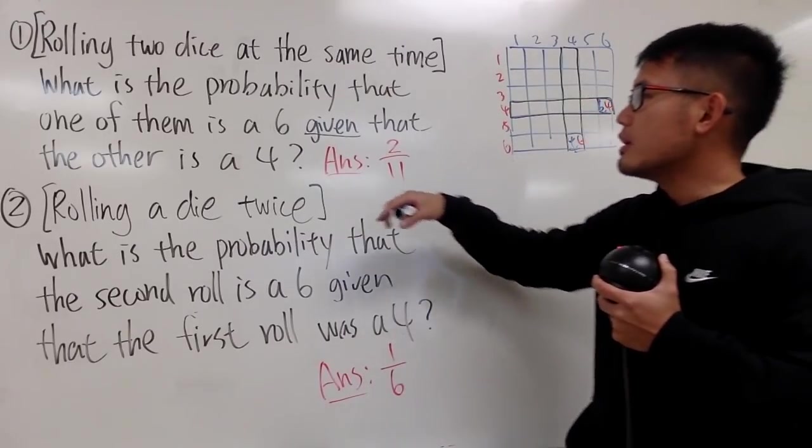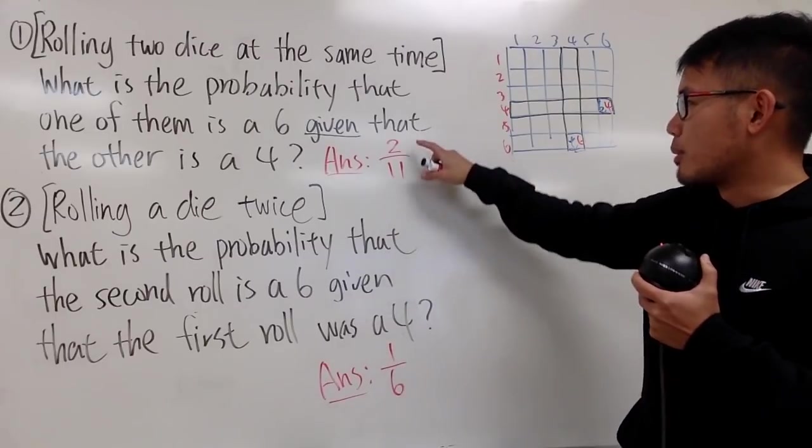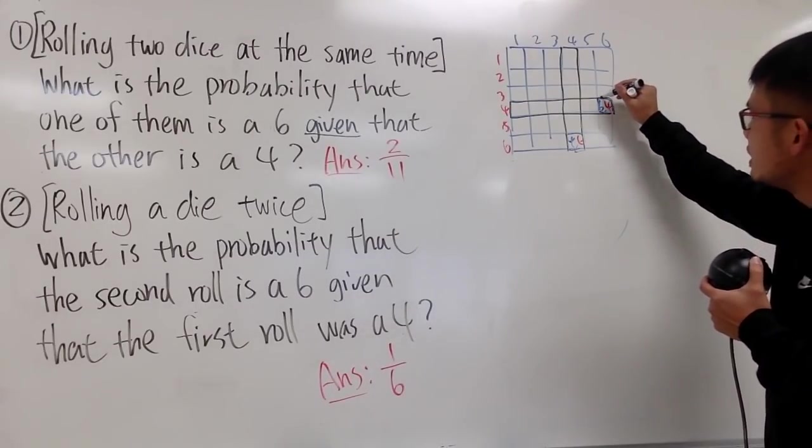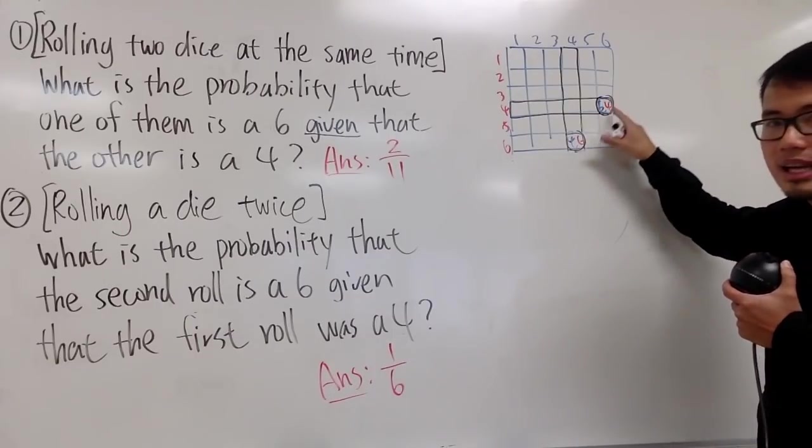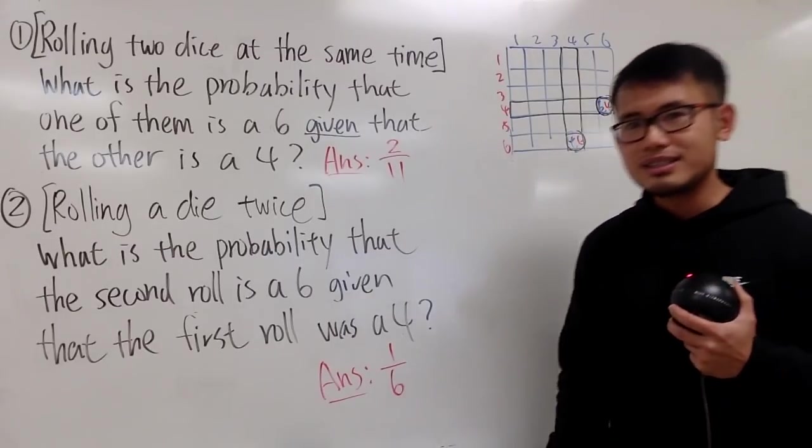Now, I will guess the other one is a 6. I will be successful to guess that with the probability of 2 over 11, because I have two boxes, namely here and here. The other one is a 6. 2 out of 11. So that's it.